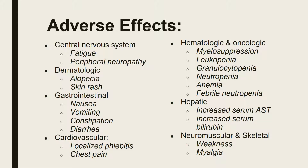For adverse effects of vinorelbine, the more common ones are: CNS — fatigue and peripheral neuropathy; dermatologic — alopecia and skin rash; gastrointestinal — nausea, vomiting, constipation, and diarrhea; cardiovascular — localized phlebitis and chest pain; hematologic and oncologic — myelosuppression, leukopenia, granulocytopenia, neutropenia, anemia, and febrile neutropenia; hepatic — increased serum AST and increased serum bilirubin; neuromuscular and skeletal — weakness or myalgia.